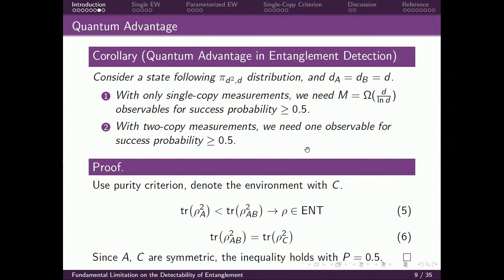This theorem also tells us that by using multi-copy measurements, we can have some advantage. Consider a state following pi_{d²,d} distribution with dA = dB = d. We have three parts: A, B, and C (the environment), all symmetric. With only single-copy measurements, we need d/log(d) observables for a successful detection with probability 0.5 according to our theorem. However, if we have two-copy measurements, we need only one observable for successful detection with probability larger than 0.5. The proof uses the purity criterion: the purity of (A,B) equals the purity of C since A,B,C form a pure system, and by symmetry this is satisfied with probability 0.5.